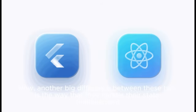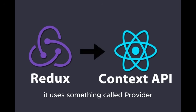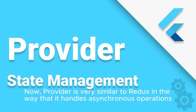Another big difference between these two is the way that they handle state management. With React Native it uses the Context API or Redux, and with Flutter it uses something called Provider. Provider is very similar to Redux in the way that it handles asynchronous operations.